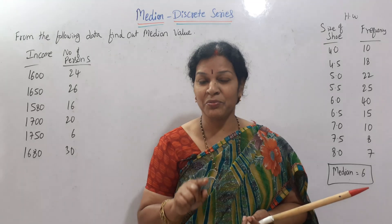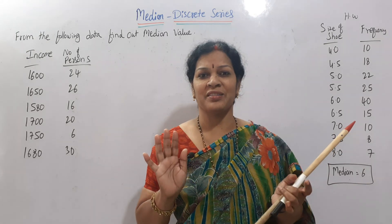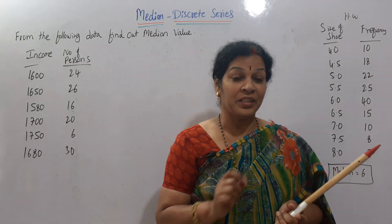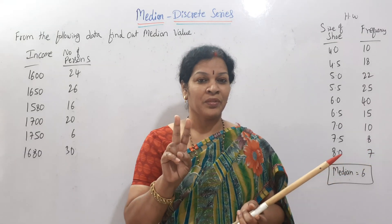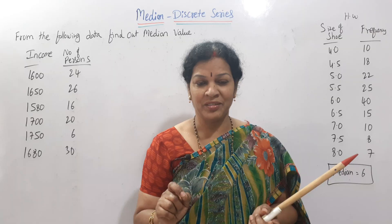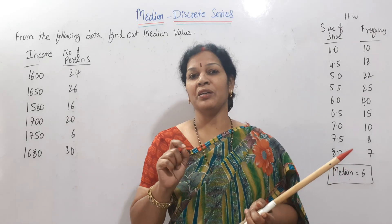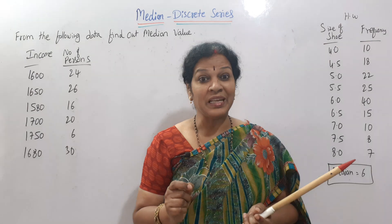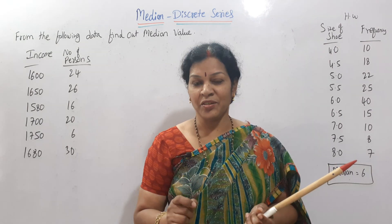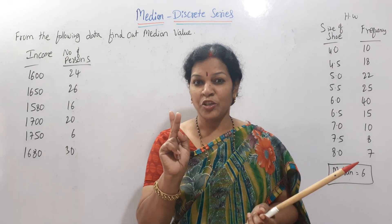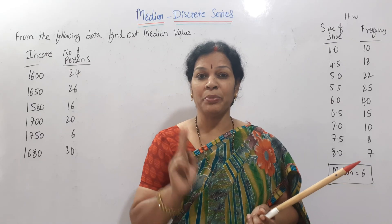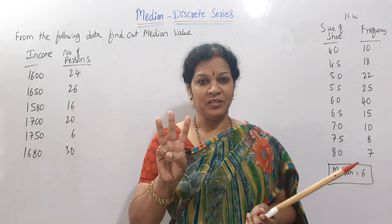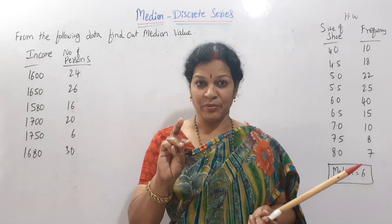In individual series, the formula for median was: size of (n+1)/2 th item. Here in discrete series, the same formula applies. In individual series there were two steps: first, arranging in ascending order, and second, applying the formula. Here, there is a third step added between those two — we have to prepare cumulative frequency.